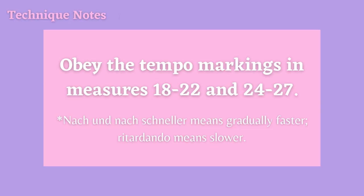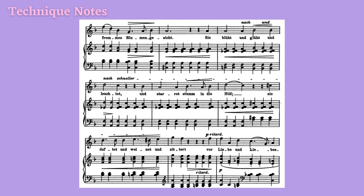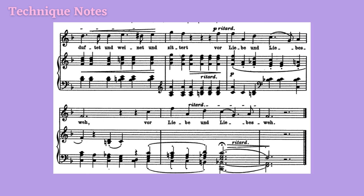Technique note number five: obey the tempo markings found in measures 18 through 22 and measures 24 through 27. In measures 18 through 22 we see the marking nach und nach schneller, meaning gradually faster. Then in measures 24 through 27 we see ritardando, meaning to get slower. These tempo markings beautifully demonstrate the excitement and joy of the blossoming flower, followed by the realization of both the love and the pain that can come from the sacred union of the lotus flower and the moon.